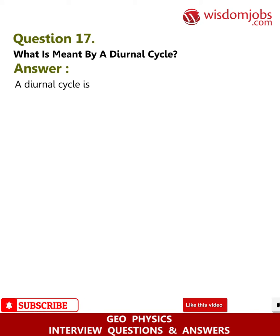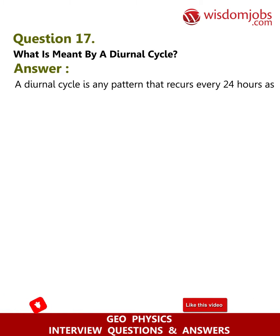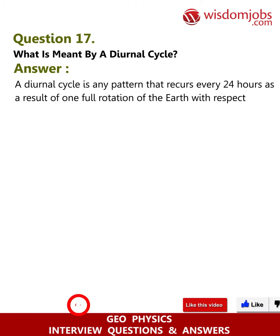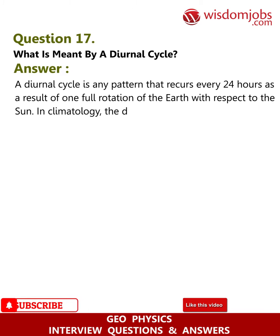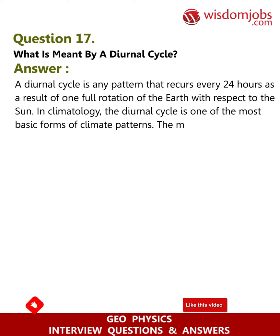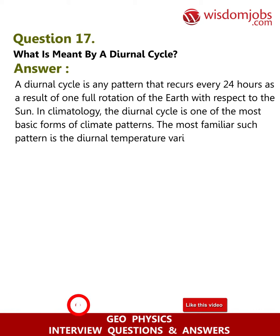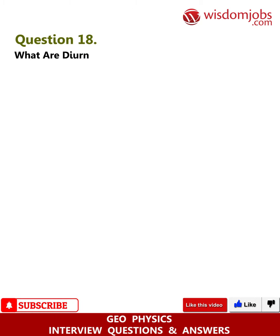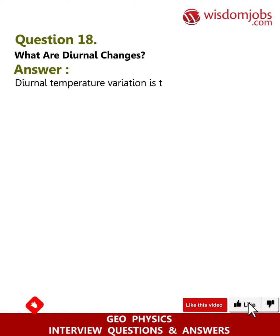Question 17: What is meant by a diurnal cycle? Answer: A diurnal cycle is any pattern that recurs every 24 hours as a result of one full rotation of the earth with respect to the Sun. In climatology, the diurnal cycle is one of the most basic forms of climate patterns.